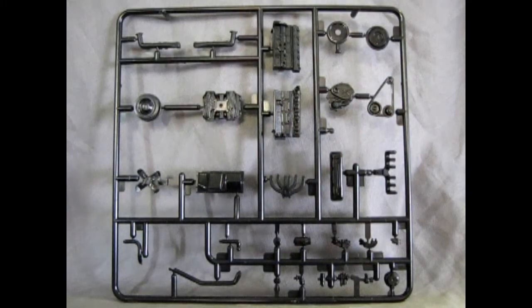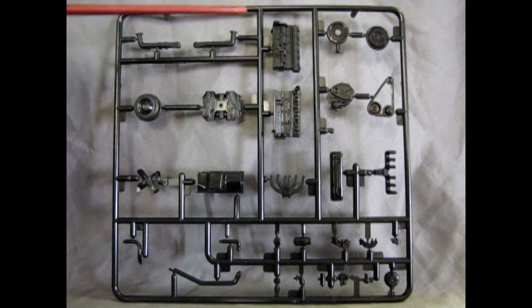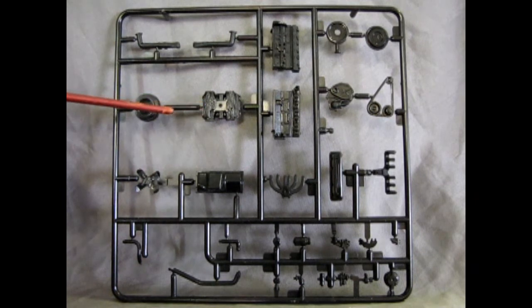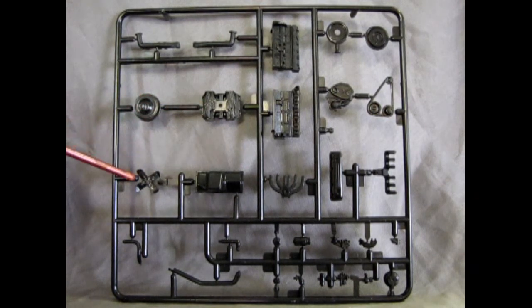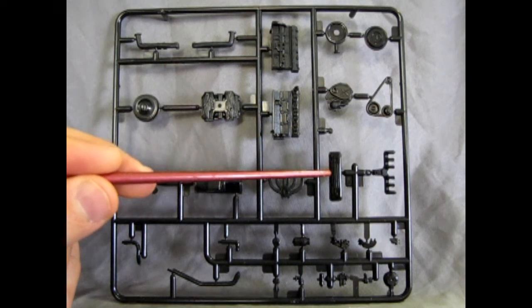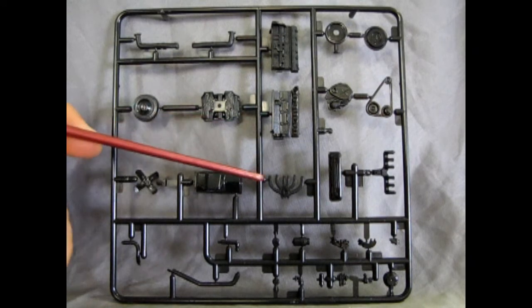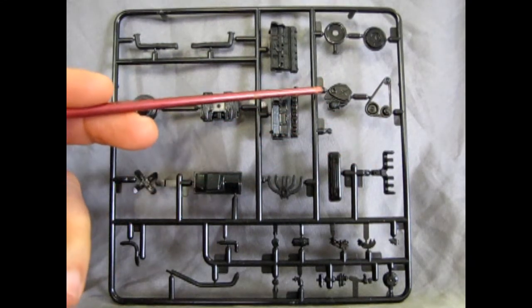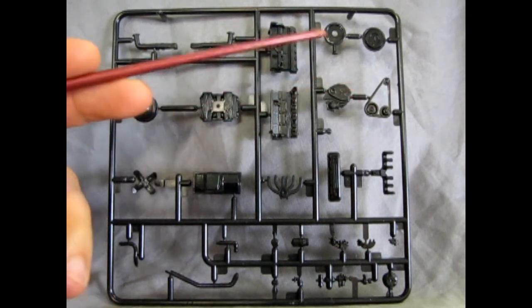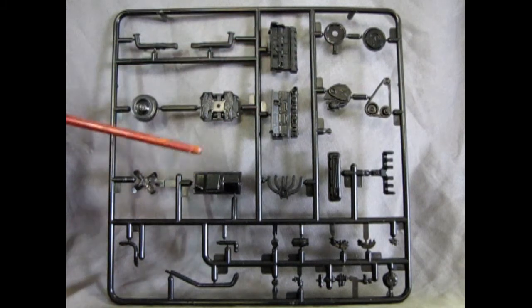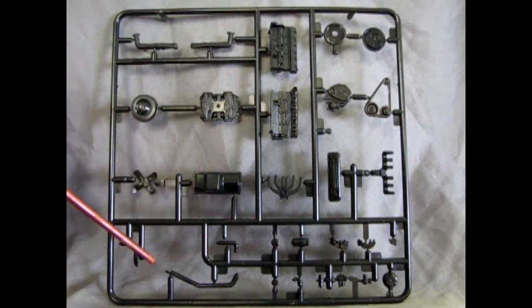So what's interesting about this is there's two parts trees that are molded in black. And on this one, we have the slant 6 motor, as well as the intake manifold for the Commando V8. There's the fan for the slant 6. And we've got the valve cover right there. The intake and the exhaust manifolds. The water pump and timing chain cover. There are the belts and pulleys. The little teeny air cleaner for the slant 6. And of course, all the rest of the engine components.